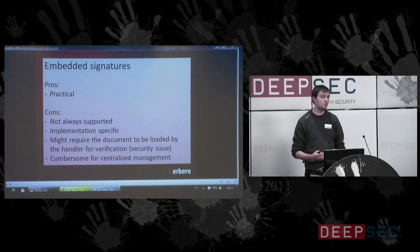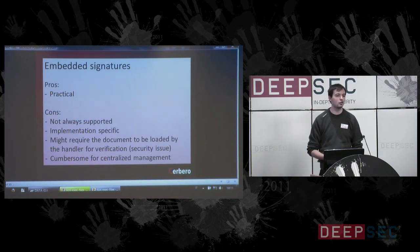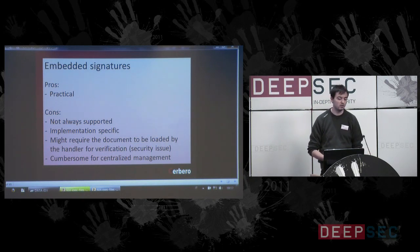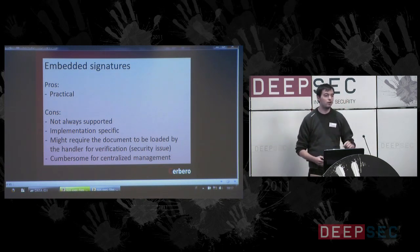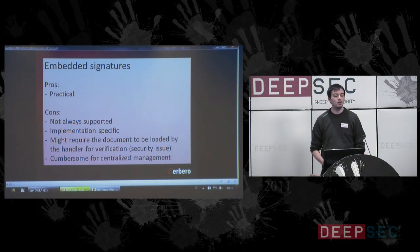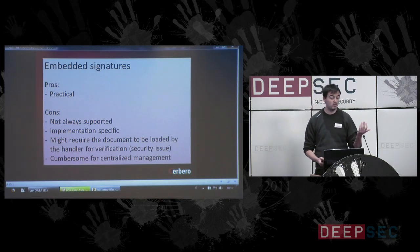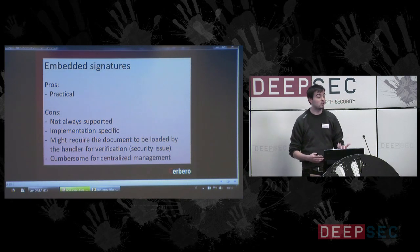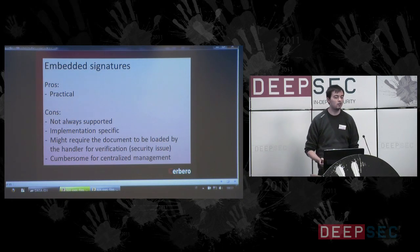Embedded signatures use standard cryptographic algorithms, but the way the signature is stored inside the file is totally custom because it needs to consider the file format itself — for instance, when hashing the file, certain parts containing the signature must be ignored. It might also require the document to be loaded by the handler for verification. If you have a PDF which is signed and you need to open the PDF before validating the signature, it becomes kind of useless. It is also cumbersome to manage signing from a centralized point because every file type has its own format and rules.